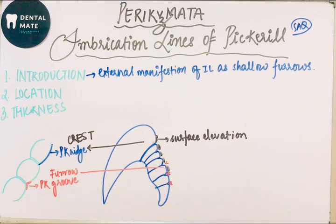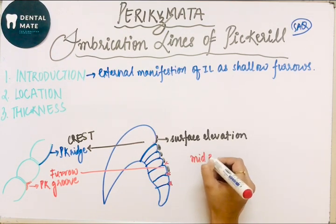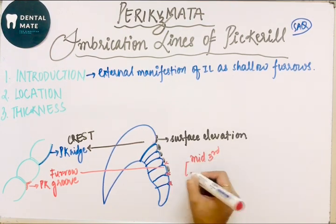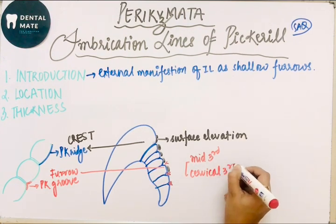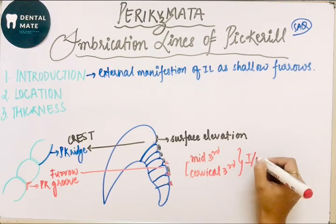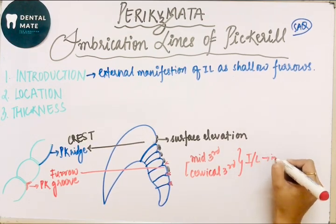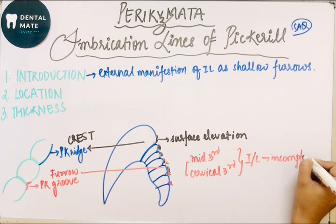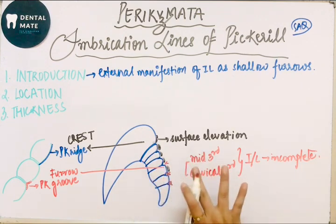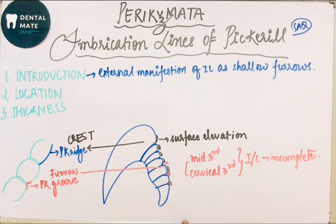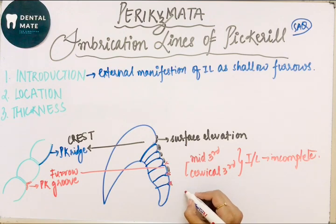Location: perichymeta is located basically in the middle third and cervical third of the facial aspect, because the incremental lines are incomplete. Instead of coursing around the tooth, they go to the outer surface from the dentino-enamel junction. It is usually seen in newly erupted teeth.